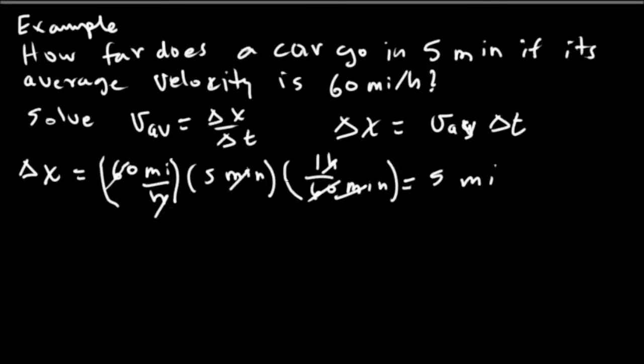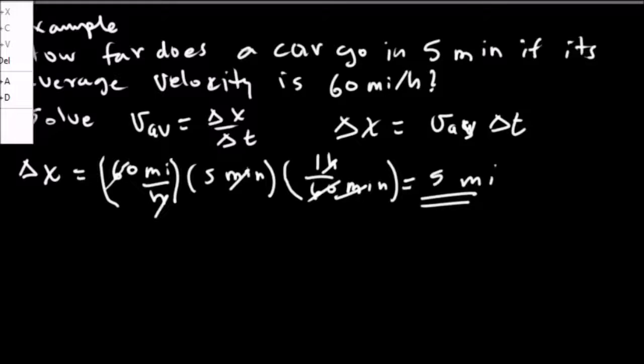And so all we're left with is 5 miles. Because the hours canceled out, the minutes canceled out, and we're left with just miles. So that is the distance that the car traveled, 5 miles.